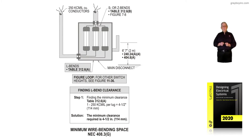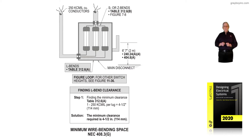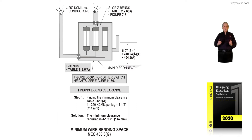This illustration deals with the minimum wire bending space in accordance with NEC 408.3G. Notice that when we enter into an enclosure, switch, or whatever it may be, we either have the conductors bent in an L-bend shape or an S or Z-bend shape.